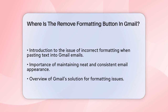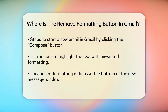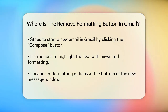When you're composing an email in Gmail, you might notice that the text you paste in sometimes carries formatting from the original source. To fix this, you need to find the Remove Formatting button. Here's how you can do it.